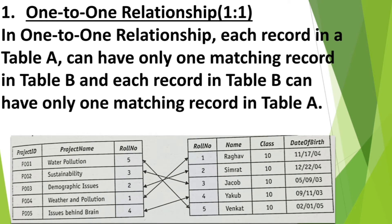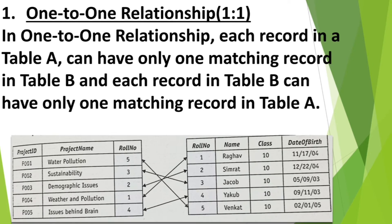The first type of relationship is one-to-one relationship. In a one-to-one relationship, each record in table A can have only one matching record in table B, and each record in table B can have only one matching record in table A. In this given example, the table on the left side is table A and the table on the right side is table B. The first table is for various projects — different projects and their project ID are there along with the roll number of the student who made that project. In the second table, the details of different students — their roll number, name, class and date of birth — is given. We can understand from this that each project is created by only one student.